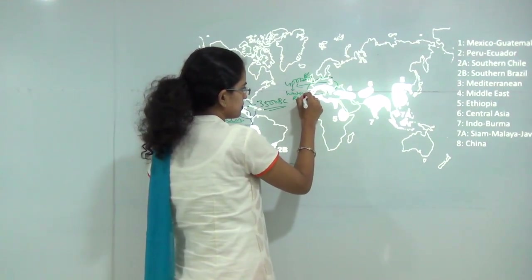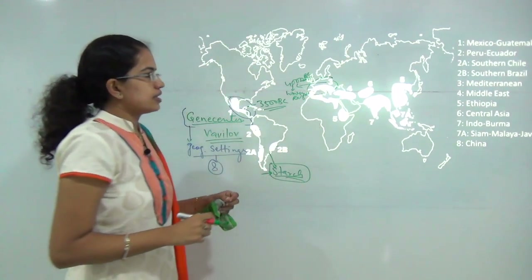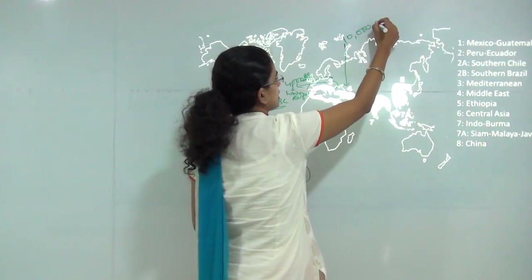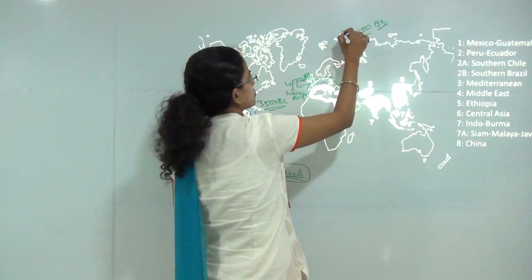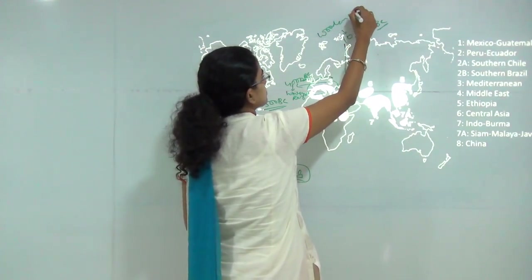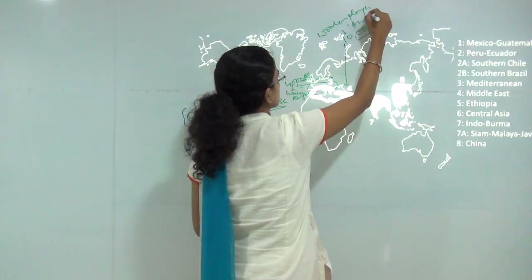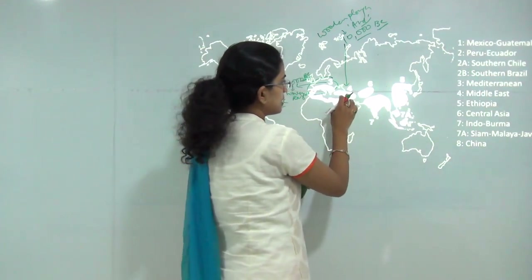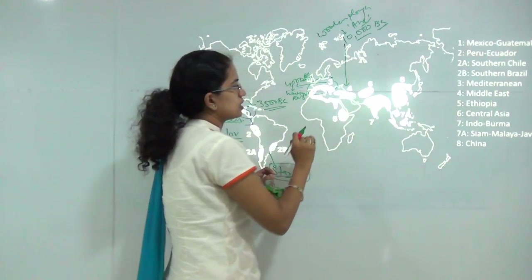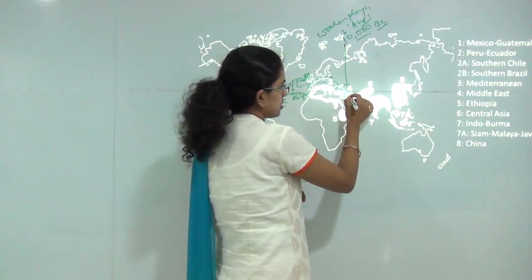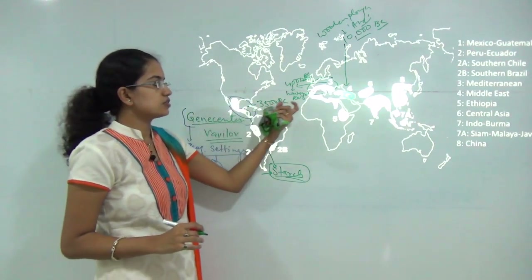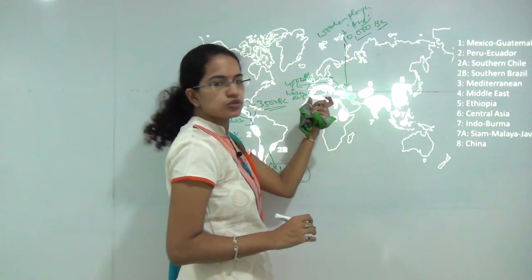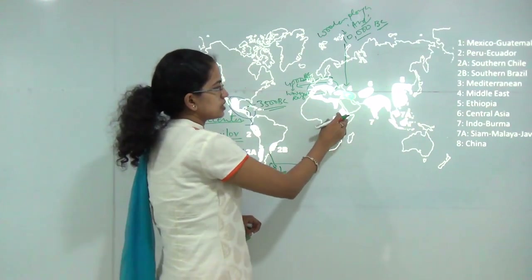The third is the Mediterranean region, around 4000 BC old, known for its unique characteristic of winter rainfall. The fourth is the Middle East region, the oldest of all at around 10,000 BC. It is known for the classic wooden plow called the 'arid' and is further subdivided into sub-regions of the Middle East and Southeast Asia.